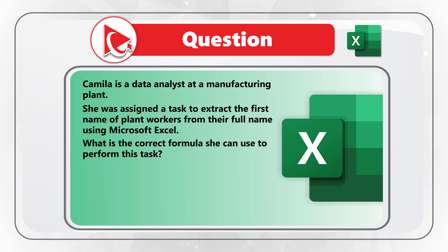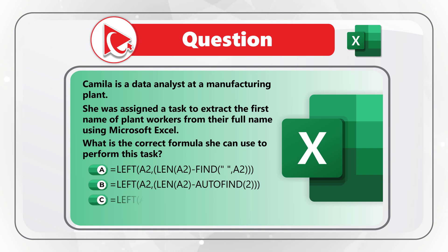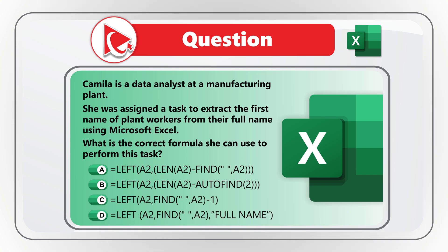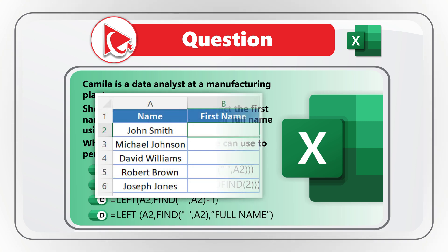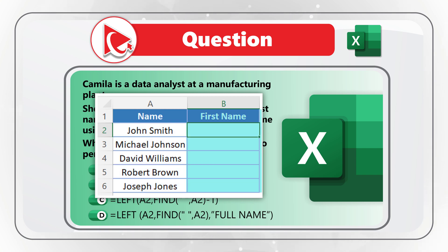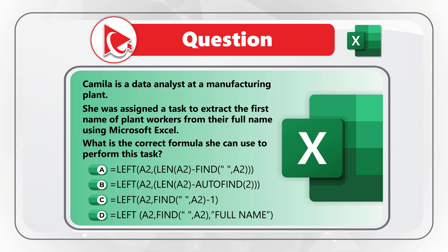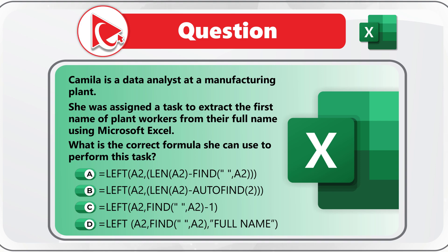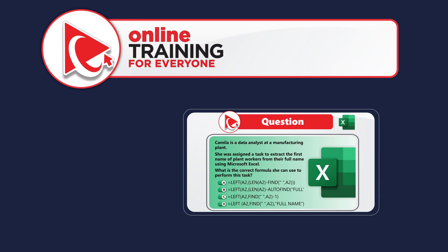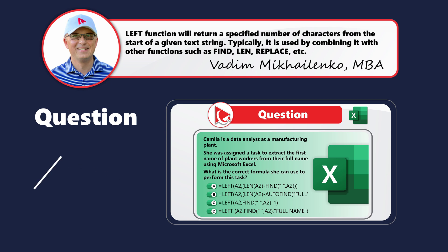What is the correct formula she can use to perform this task? There are four different choices — A, B, C, and D — as well as a snippet of data where column A contains the full names of the workers and column B has an empty first name column. Take a close look; maybe pause this video to see if you can come up with the answer.